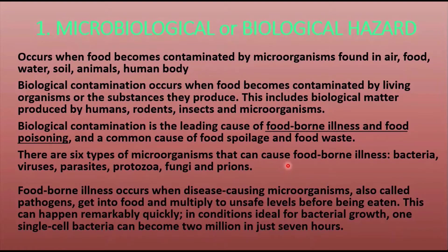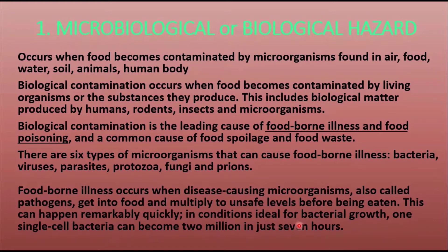There are six types of microorganisms that can cause foodborne illness: bacteria, viruses, parasites, protozoa, fungi, and prions. These are the six major types responsible for causing foodborne illness. Foodborne illness occurs when disease-causing microorganisms — generally called pathogens — get into food and multiply to unsafe levels before being eaten. This can happen remarkably quickly; one single bacterium can become two million in just seven hours.